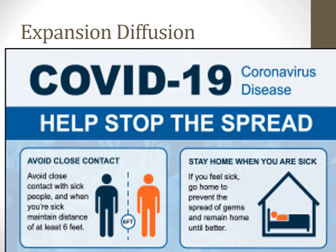As a historical example, smallpox came to the new world through relocation diffusion. But once it was here, it grew continuously larger, which is expansion diffusion. But how did it grow larger? Through contact, which spread the disease — so it spread through contagious diffusion.